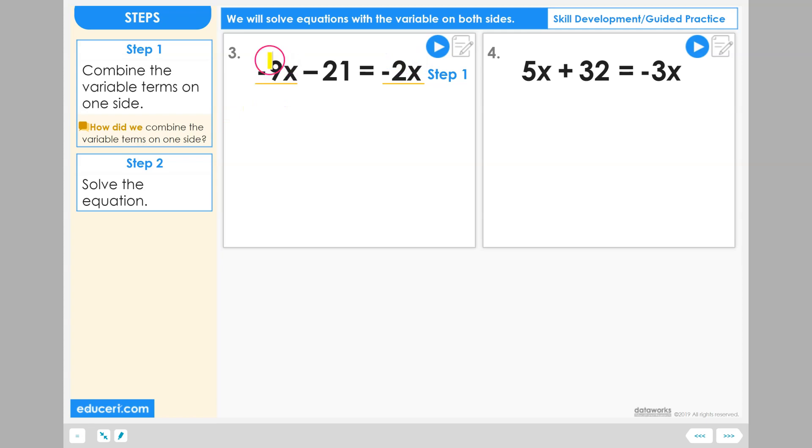So now we need to use an inverse operation, an additive inverse operation, to remove negative 9x. The whole term, the opposite of the whole term, would be to add 9x. And if we're going to do it to one side, we need to do it to the other side. Now evaluating, the negative 9x and positive 9x cancel out, leaving us with just negative 21 on the left side, equals negative 2x plus 9x.